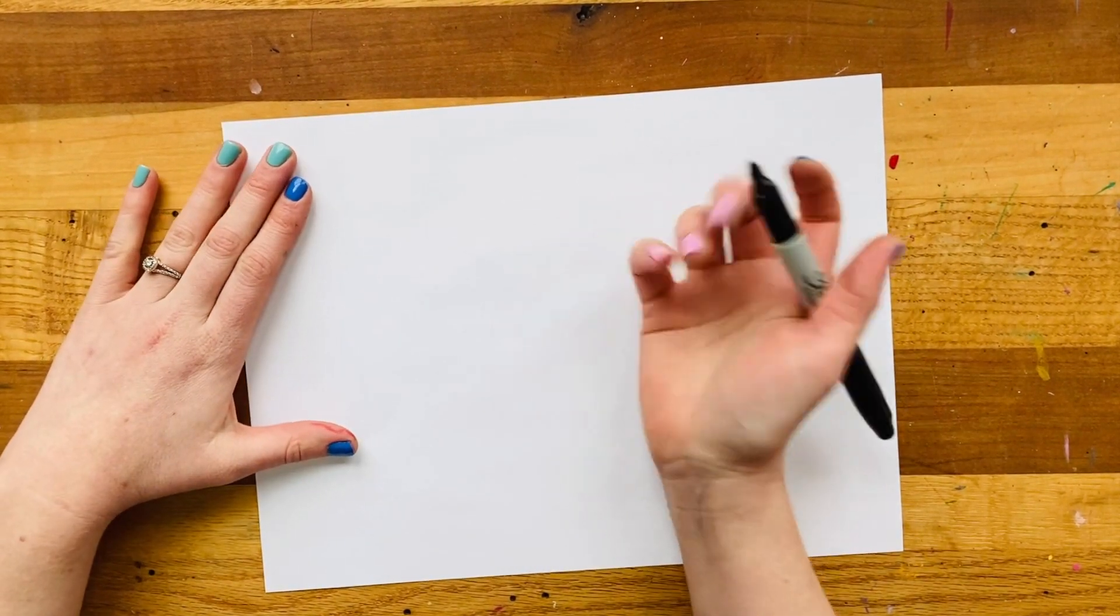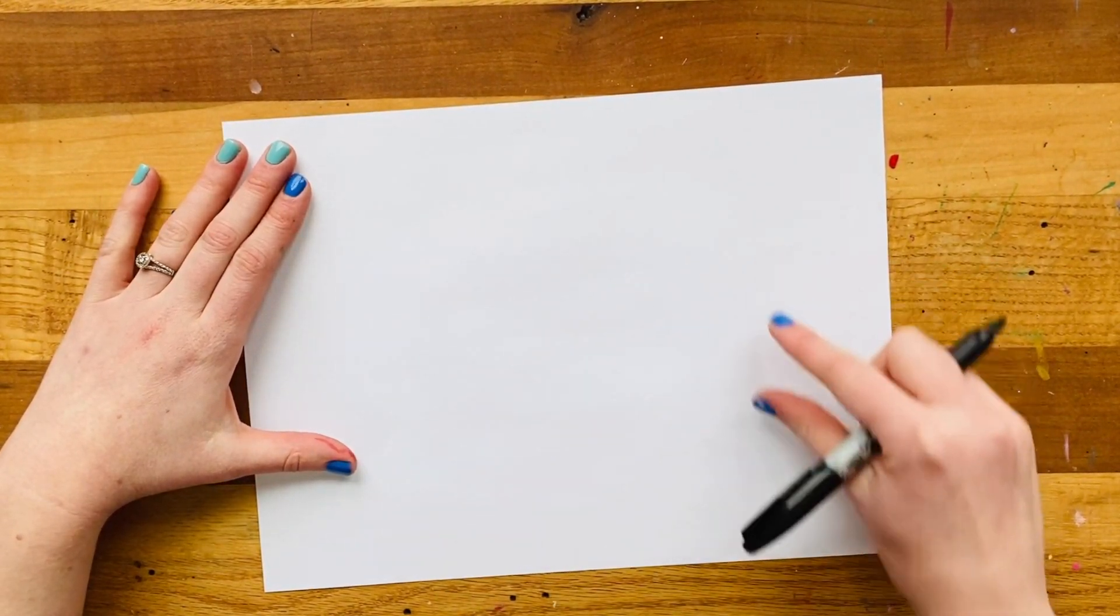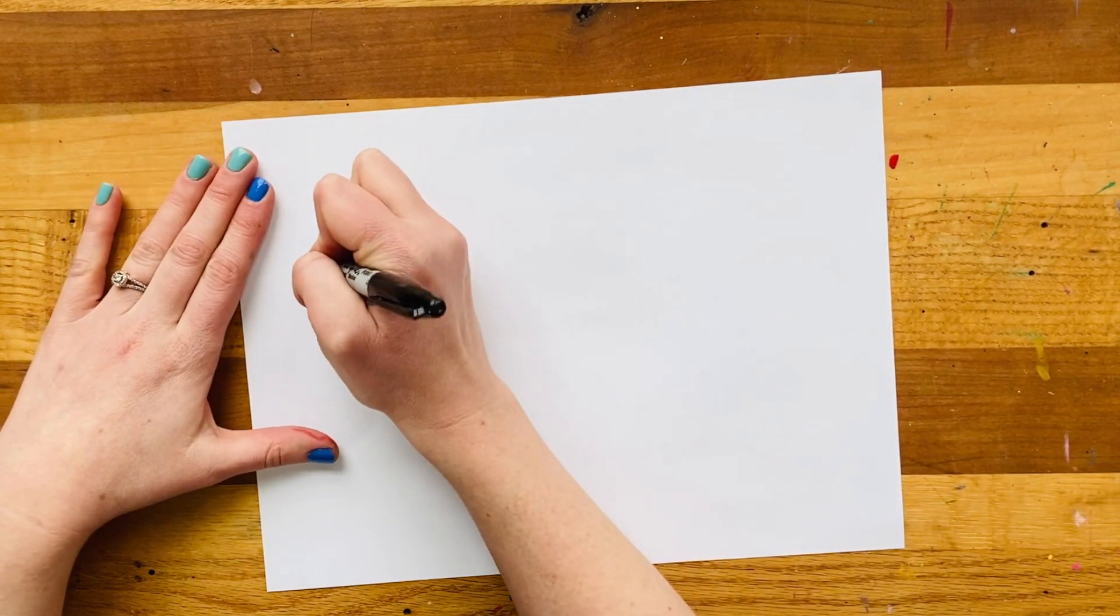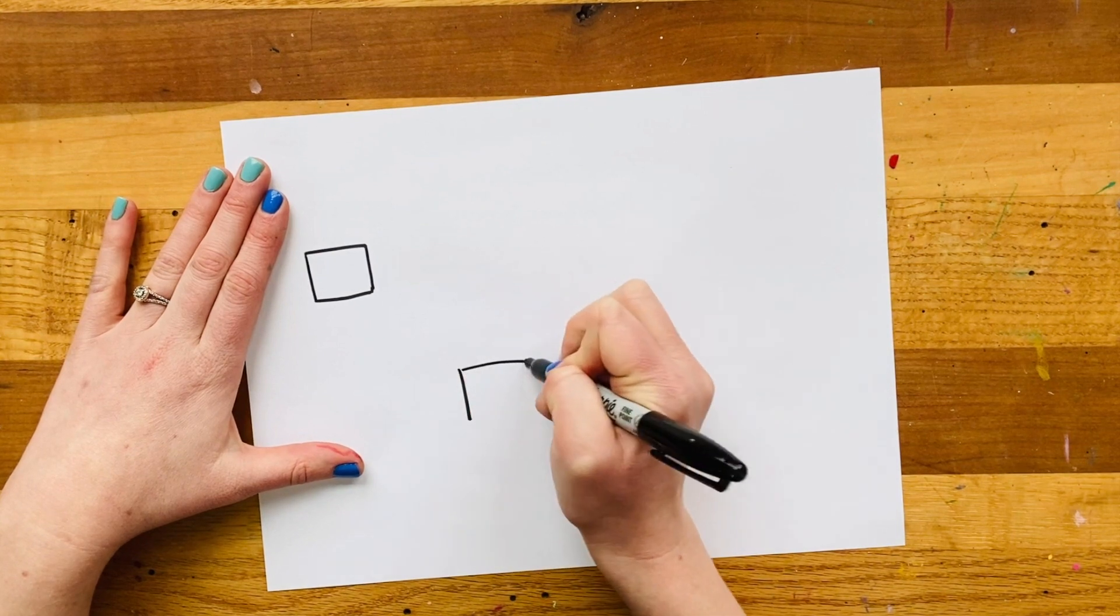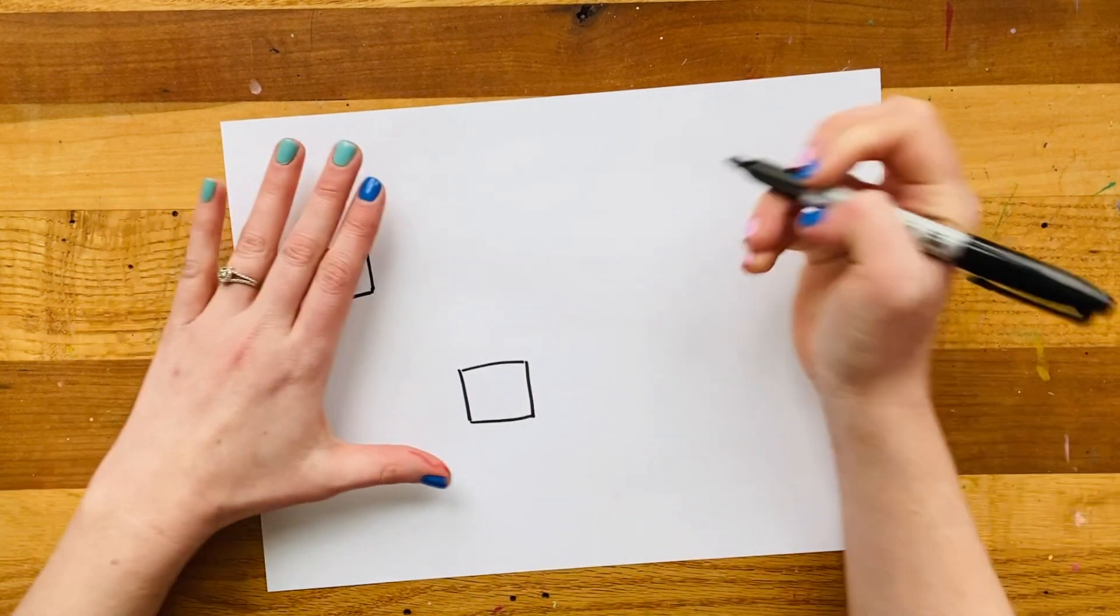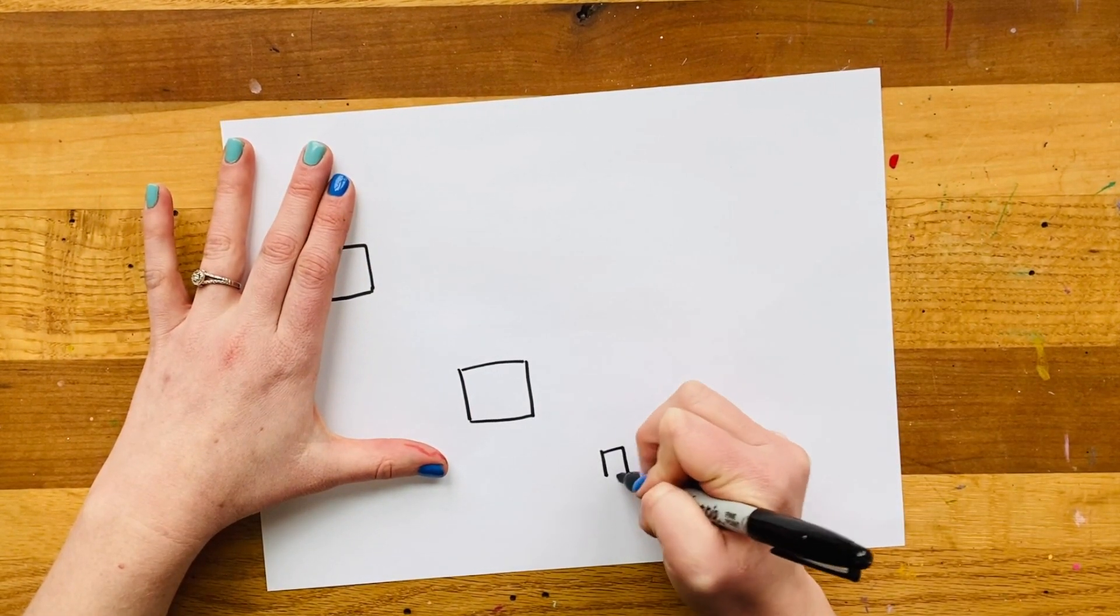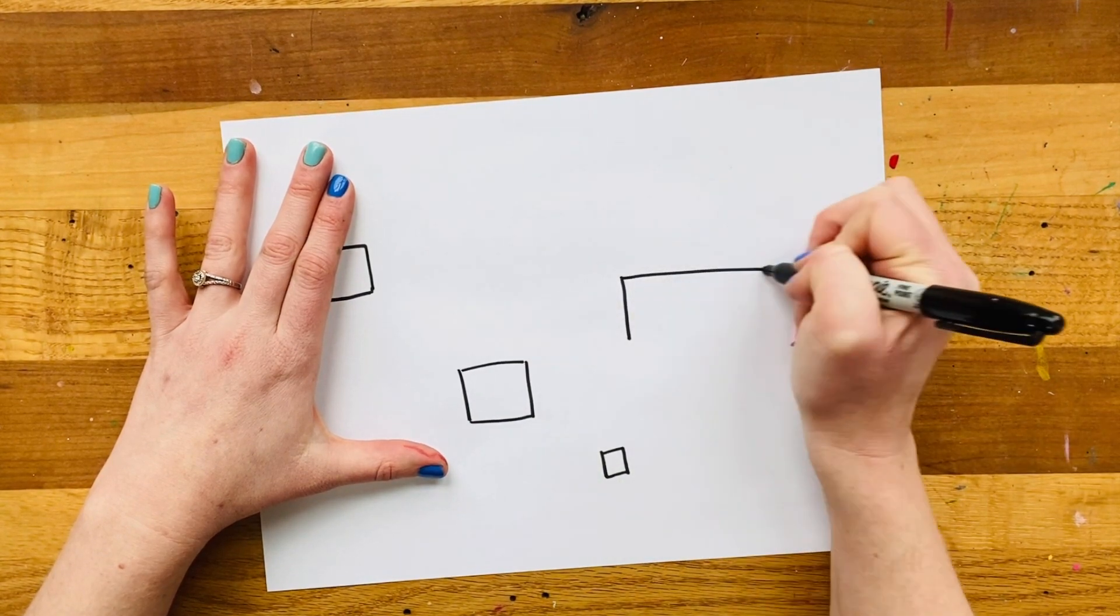So the first thing we're going to do is make just a few squares and rectangles on our paper. I would say maybe three squares, four or five rectangles. Just kind of pick where you'd like them to be. So I'm gonna do a little baby square over here, big long rectangle over here.